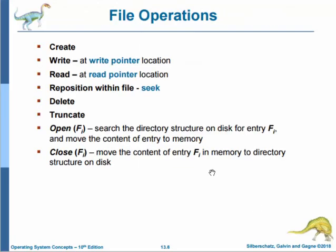A file is an abstract data type and to define a file properly, we need to consider the operations that can be performed on files. The operating system can provide system calls to create, write, read, reposition, delete, and truncate files. Let's examine what the operating system must do to perform each of these seven basic file operations. It should be easy to see how other similar operations such as renaming a file can be implemented.